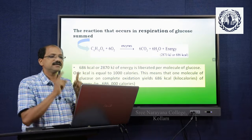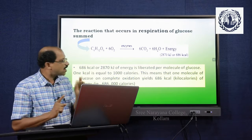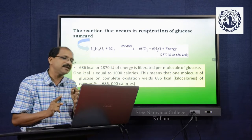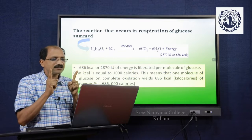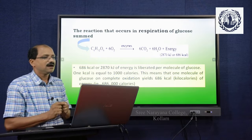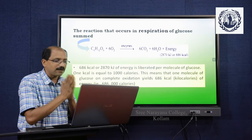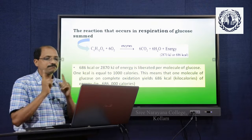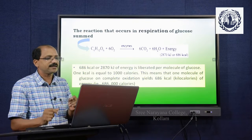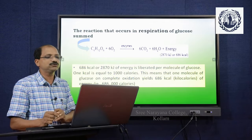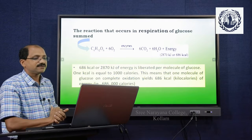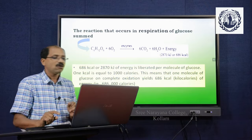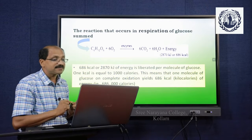The reaction that occurs in respiration of glucose is summed up like this: C6H12O6, with enzymes involved, yields 6CO2 plus 6H2O plus energy. In this breakdown process, 686 kilocalories or 2,870 kilojoules of energy is liberated per molecule of glucose. One kilocalorie equals 1,000 calories, meaning 1 molecule of glucose on complete oxidation yields 686 kilocalories, or 686,000 calories.